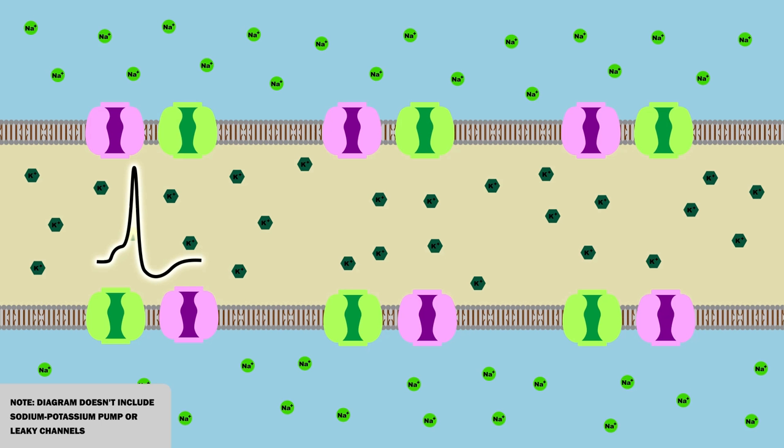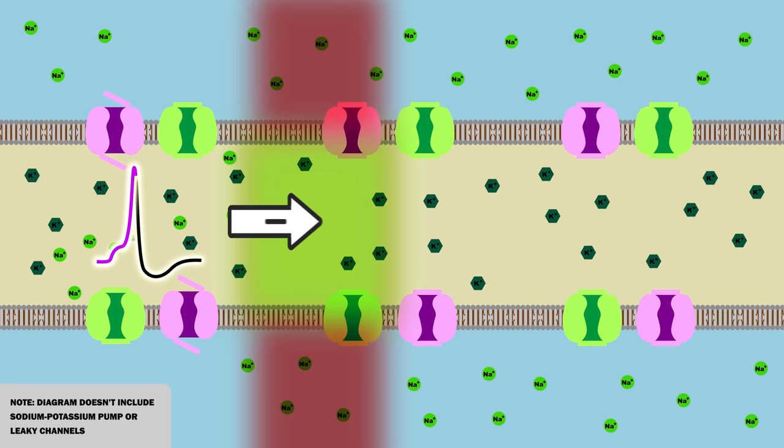We've now seen what happens locally at one segment of the axon, but how does the action potential propagate? Well, when the sodium ions are rushing in during depolarization, they repel each other and so spread out. This makes the next section of the axon reach threshold, and also have an action potential.